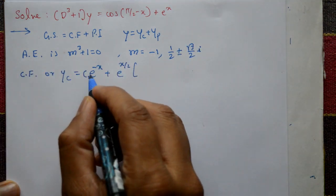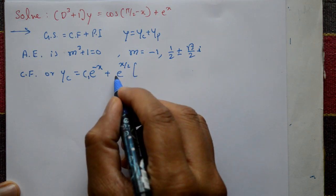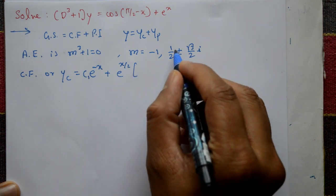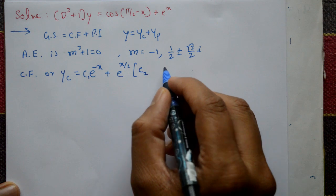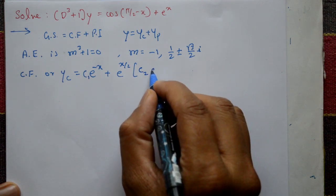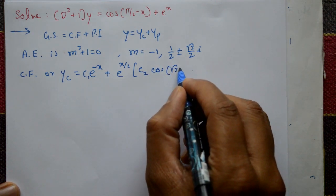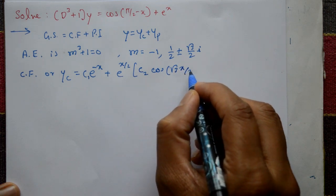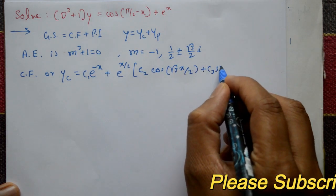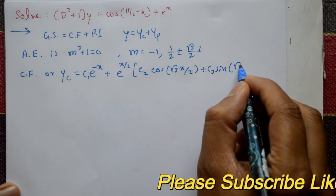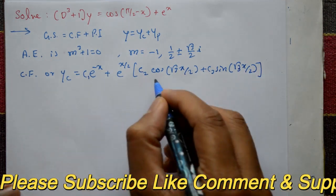The complementary function is: yc = c₁e^(−x) + e^(x/2) [c₂ cos(√3x/2) + c₃ sin(√3x/2)]. This is the complementary function.